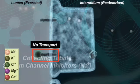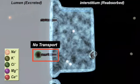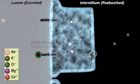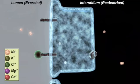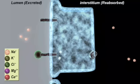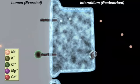When the sodium channel inhibitors are present, they block the sodium channel. This prevents the continual reabsorption of sodium and also prevents the overall excretion of potassium. This is why sodium channel inhibitors are called potassium sparing.